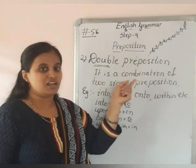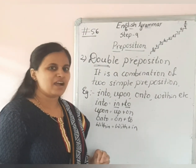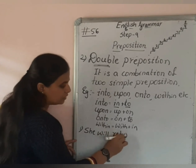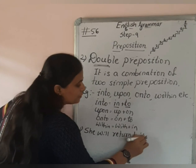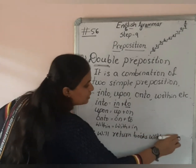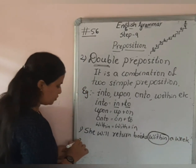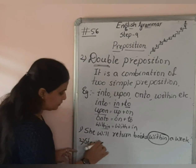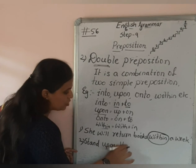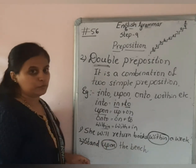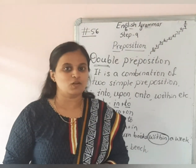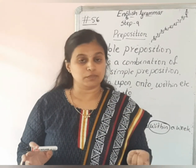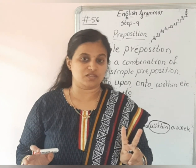Let's have these in sentences. For example: 'She will return books within a week.' Here, 'within' is a double preposition. Another example: 'Stand upon the bench.' Here, 'upon' is a double preposition. So, double prepositions are those which are a combination of two simple prepositions. Simple prepositions are made up of only one word, whereas double prepositions consist of two simple prepositions.